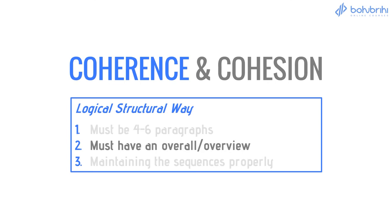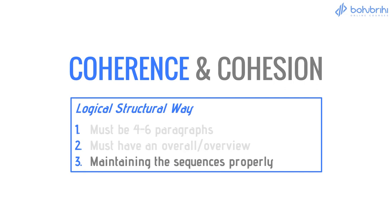For general training, you need 3 points across 3 paragraphs, plus a first introduction and a last conclusion. For academic, you need an introduction, an overall overview, and a body of at least 2 paragraphs. You must also maintain the sequence properly. So the structure for academic is: introduction, overall overview, and body paragraphs.